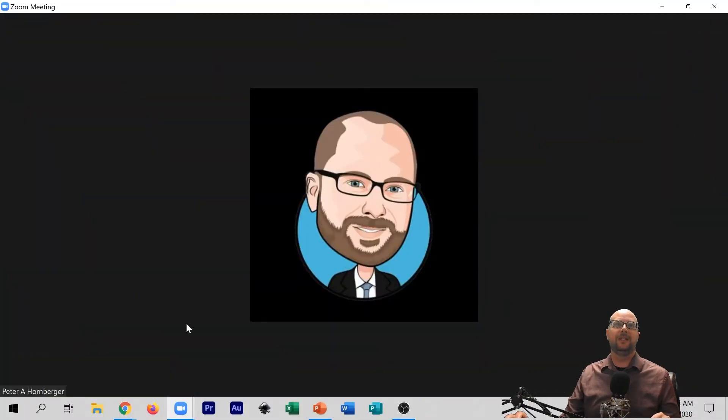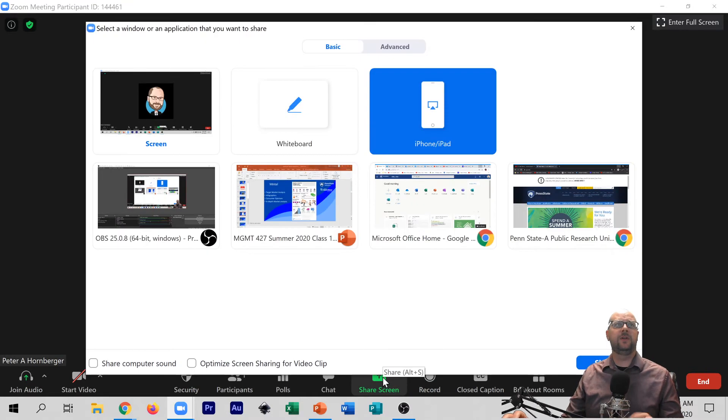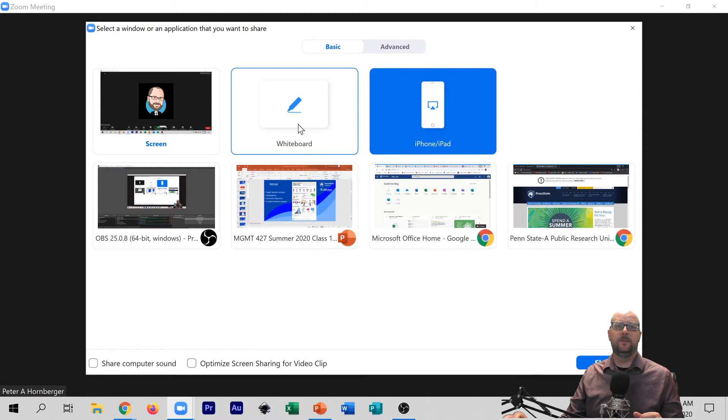Now we're over in the Zoom software, and you're probably fairly familiar with this bottom menu. The point we're going to use here is right in the center, the share screen button. If you click on that, it's going to bring up a bunch of your windows, including the whiteboard that is embedded in Zoom.